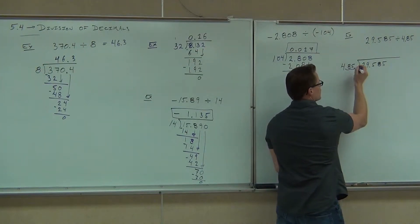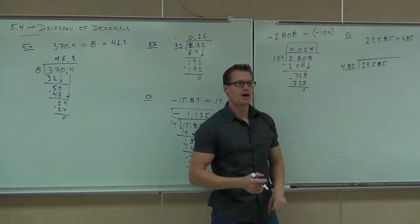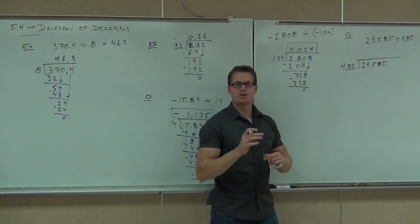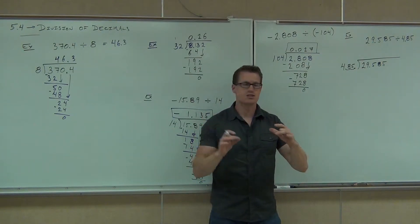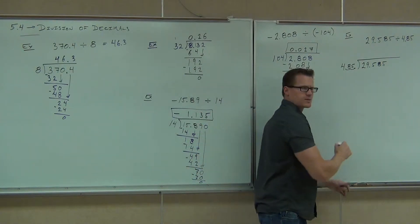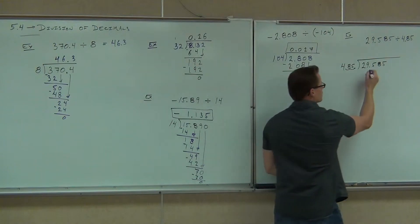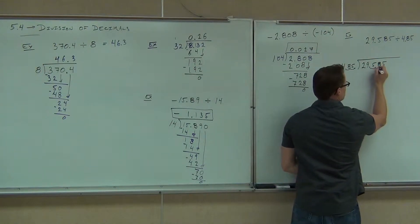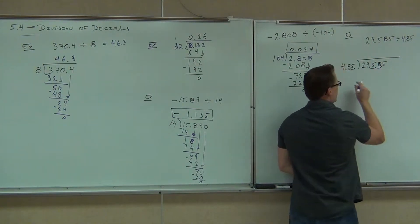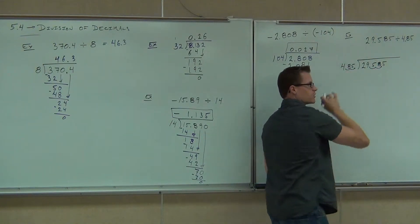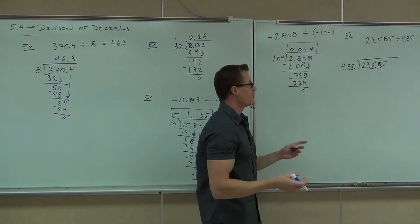So to make that a whole number, I had to move two spaces. Now we do the same thing with the number under our division symbol. How many spaces again? Two. Why didn't you move it to this? You have to make this a whole number. It won't work if that's a decimal.